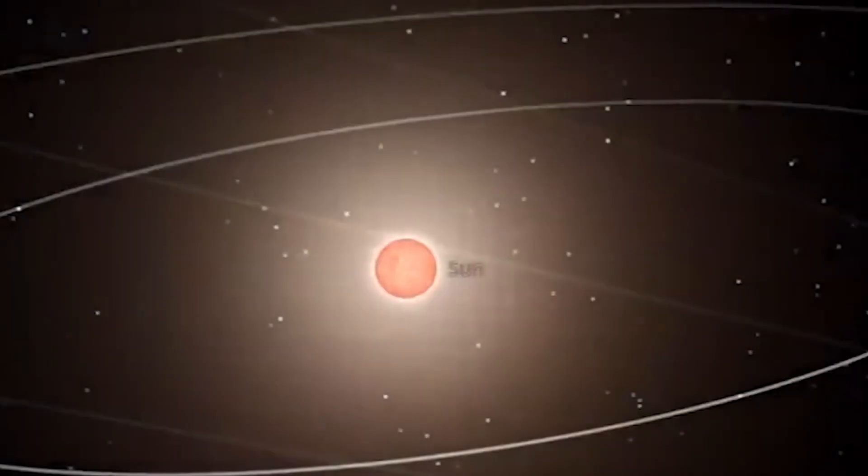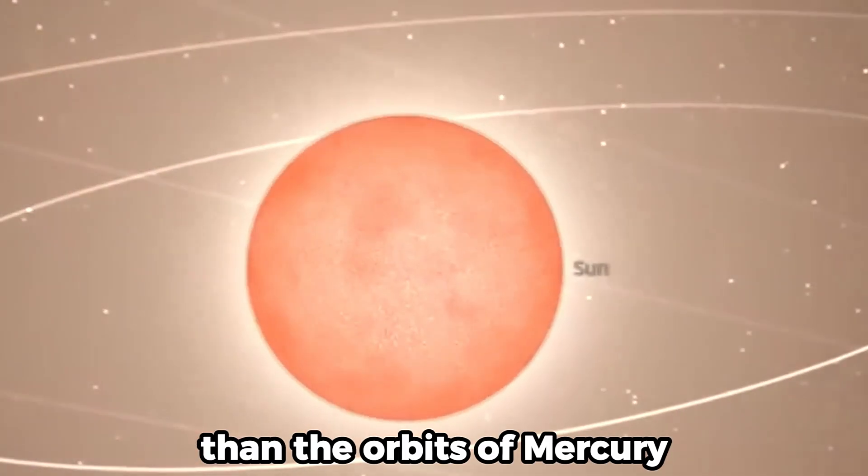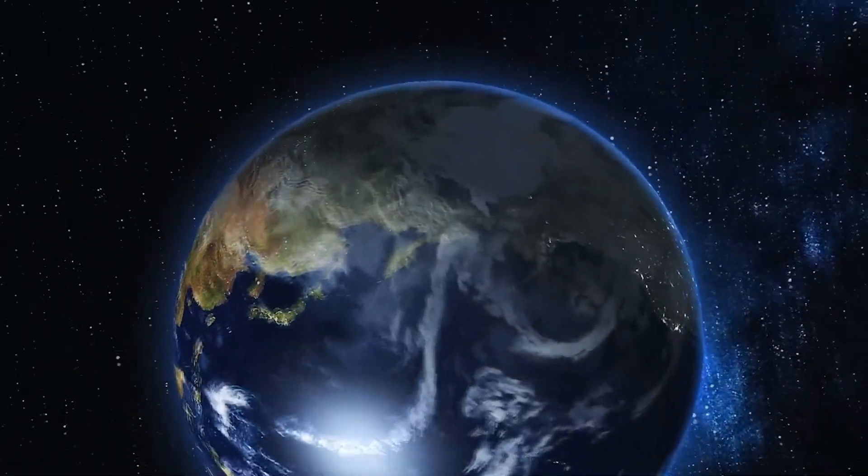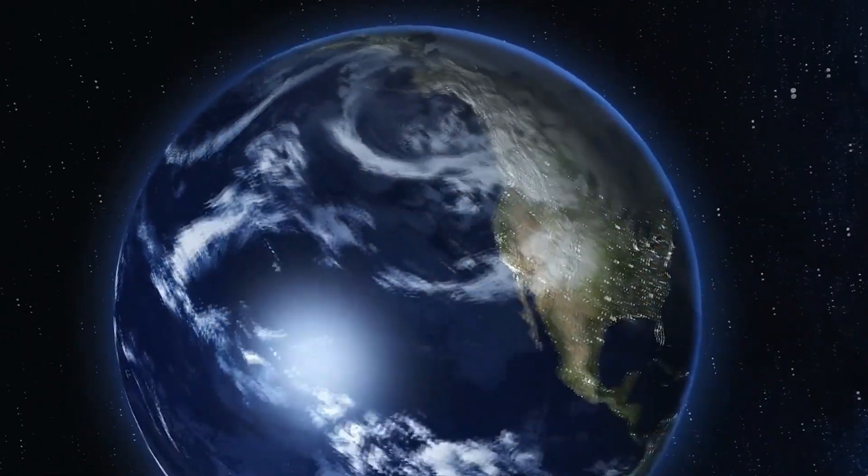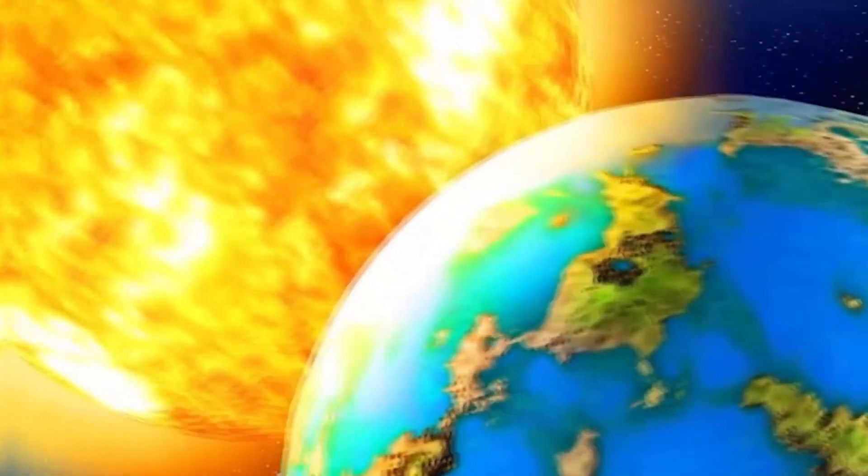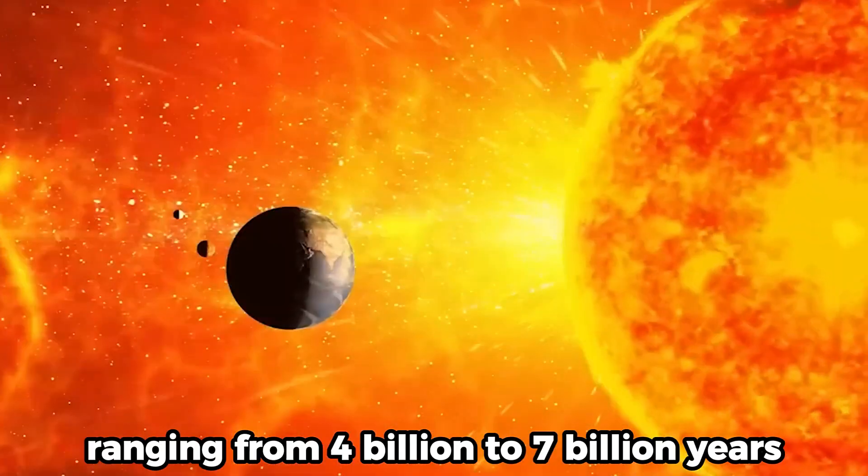The Sun will expand to a size that is greater than the orbits of Mercury, Venus, and possibly even Earth as a result of this transition, which will take place over a period ranging from 4 billion to 7 billion years.